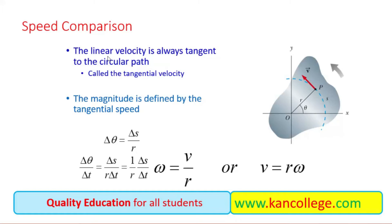The linear velocity is always tangent to the curved path or to the circle, and it is also called the tangential velocity — its magnitude is defined by the tangential speed. The relationship between the angle and the arc length is given by S equals R theta. If we divide both sides by delta T, we get delta theta over delta T, which is the angle per unit time — that is, the angular velocity. And delta S over delta T is the linear velocity. So rearranging gives V is equal to R omega.